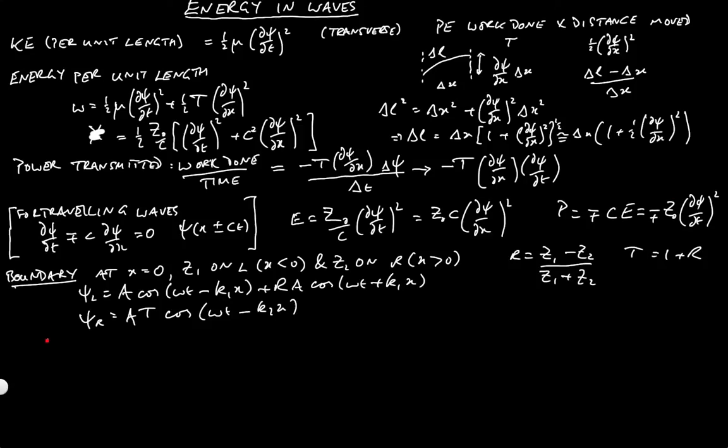In order to calculate the power transmission at the boundary, which is really what matters, it's a question of whether the power transmission is conserved across the boundary, then we need to work out a number of different forms. We need to work out dpsi left by dx, and that's given by k1 a into sine of omega t minus k1 x minus r sine of omega t plus k1 x.